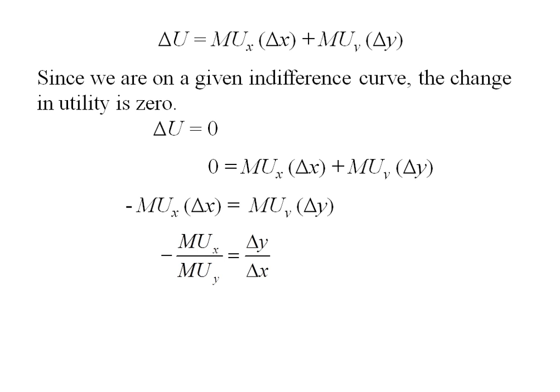Then, my left-hand side will be the negative of the ratio of the marginal utility of x to y, and the right-hand side is delta y over delta x.